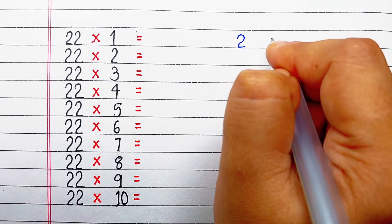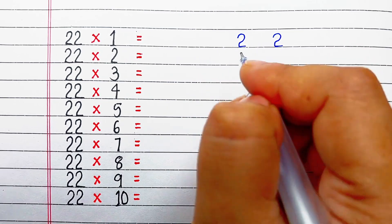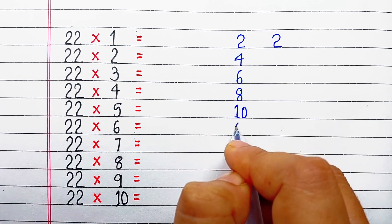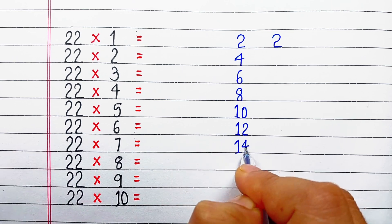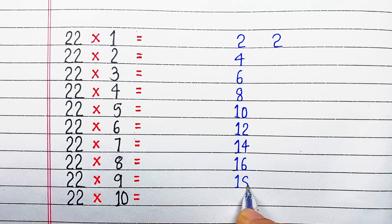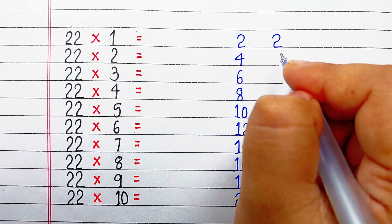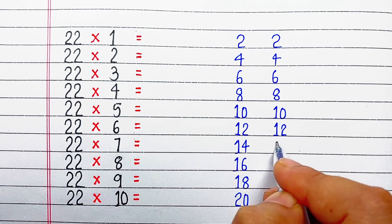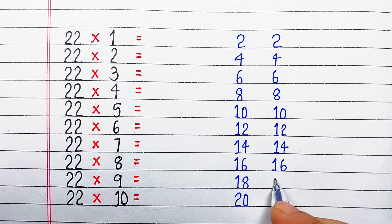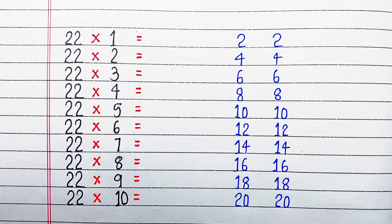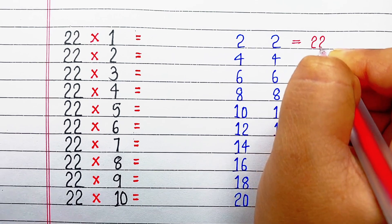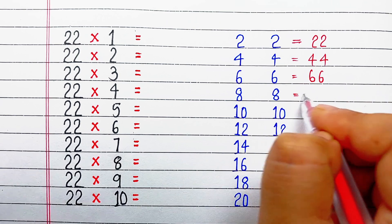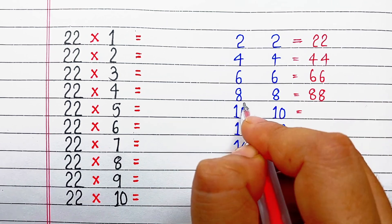To the left hand side we will write the table of 2, and to the right hand side we will write the table of 2 as well. So combining: 2 and 2 makes 22, 4 and 4 makes 44, 6 and 6 makes 66, 8 and 8 makes 88.